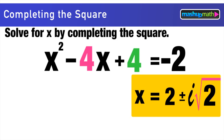We leave our solution in a + bi form. To summarize, remember the steps: first, rearrange so all constants are on the right side of the equal sign; then add (b/2)² to both sides; then factor and solve. And that's all there is to it.